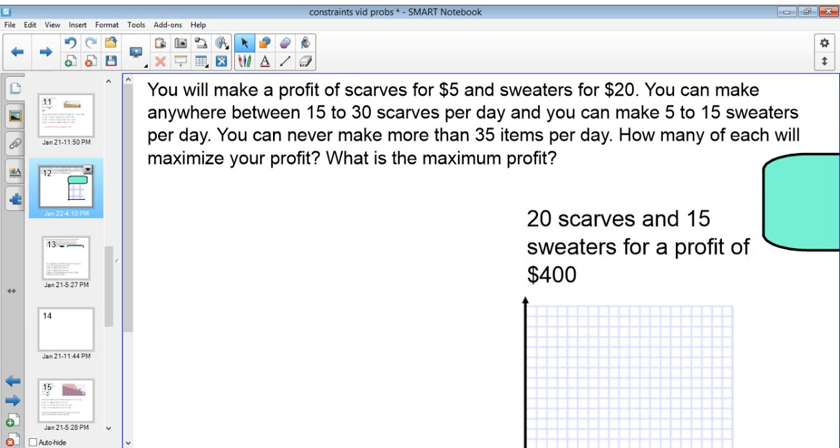Hopefully you got that the answer was 20 scarves and 15 sweaters for a profit of $400. If you didn't stick around and I'll explain it, if you did, then fast forward to the other problem.